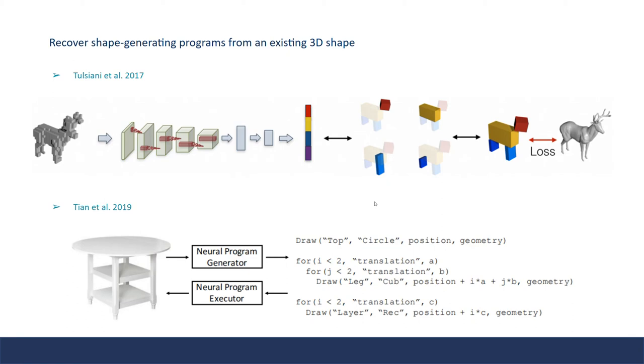In a more recent work, the model can output a 3D shape program consisting of loops and other high-level structures. The system can also execute the program to reconstruct the shapes.